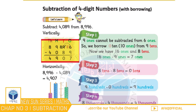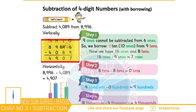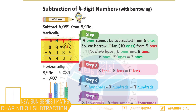Bacchiyon, kyunki 6, 9 se chhota hai, hum 9 ko 6 mein se subtract nahin kar sakte. Isliye hum 9 tens mein se 1 ten, 6 ones ko borrow karwayenge. Jis ki wajah se 6 ones, 16 ones mein tabdeel ho jayenge aur tens place par 8 tens reh jayenge. Jiske baad hamara jawab banega 7 ones.